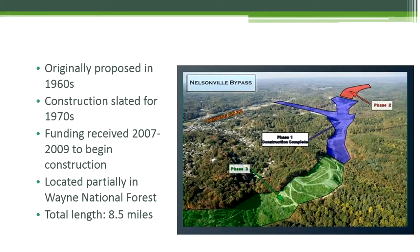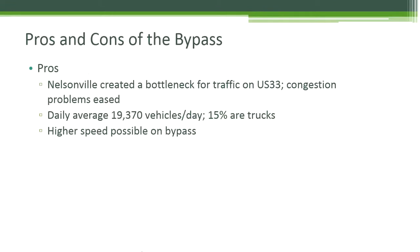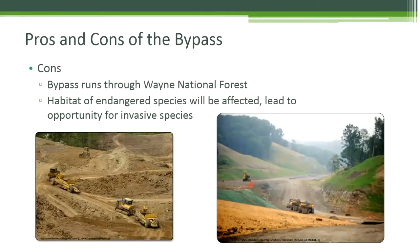It's eight and a half miles in length and goes through a portion of the Wayne National Forest. There are some advantages to having the Nelsonville bypass in place: ease of traffic congestion through Nelsonville and higher speeds possible on the bypass. Unfortunately, there are no advantages for wildlife along the bypass. The bypass runs through Wayne National Forest, which means some habitat was completely destroyed, including habitat of endangered species in the area.